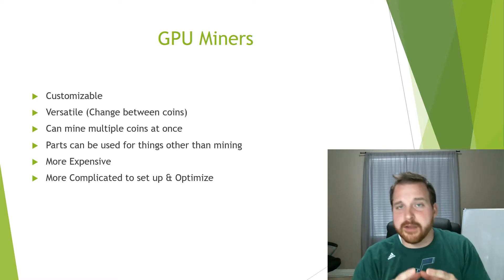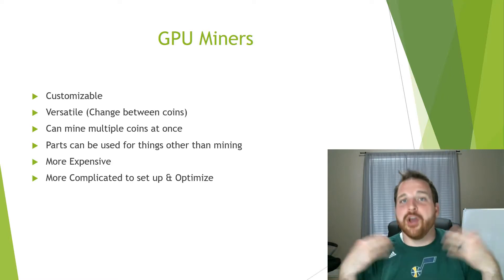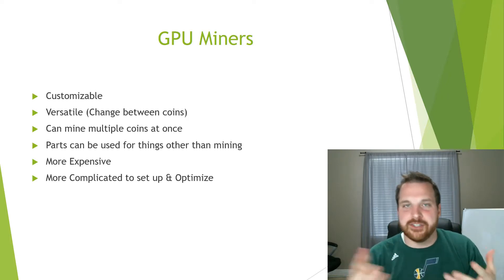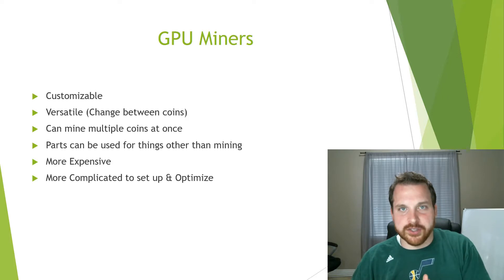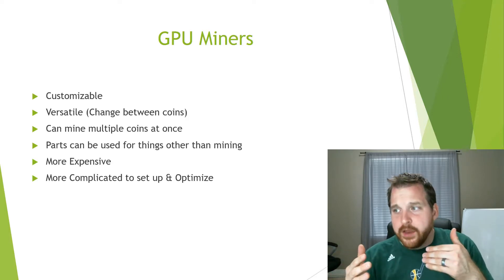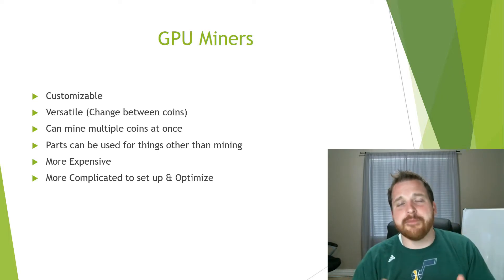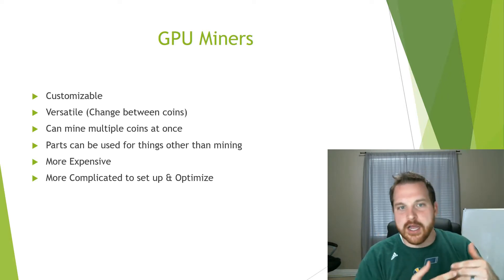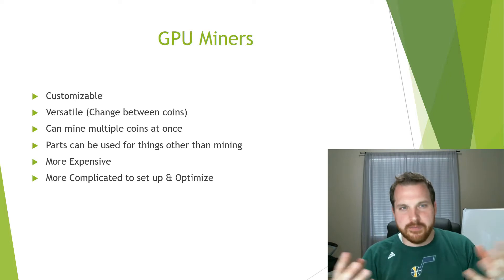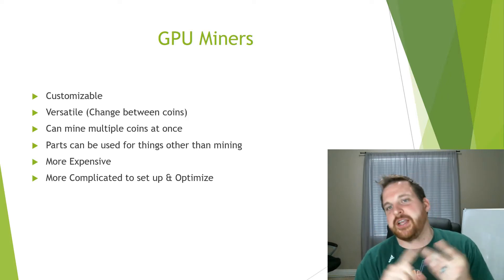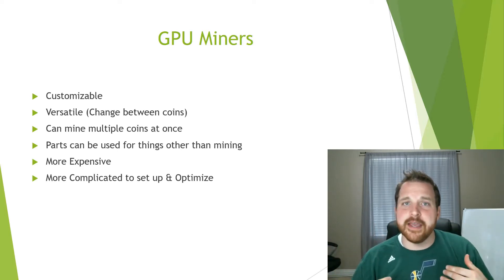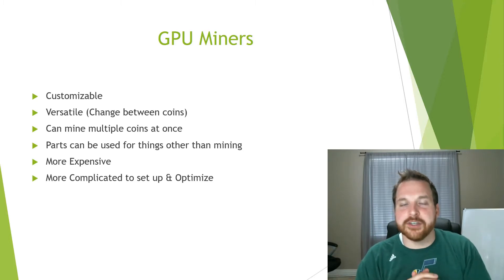GPU rigs are more complicated to optimize. ASIC miners are generally plug-and-play — you get the box, plug it in, input some basic information, and it's already optimized. But with GPU rigs you'll spend a lot more time researching what to buy, how to optimize it, how to overclock the cards, how to flash the BIOS, what operating system to use, and what mining software to run. There are a lot of pieces of information that can be heavy if you're not willing to invest that time and energy.